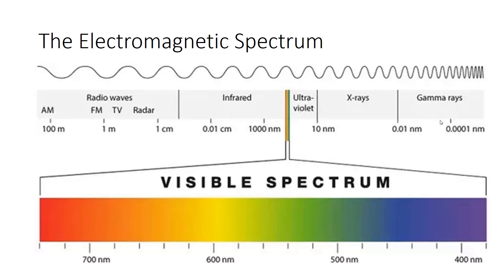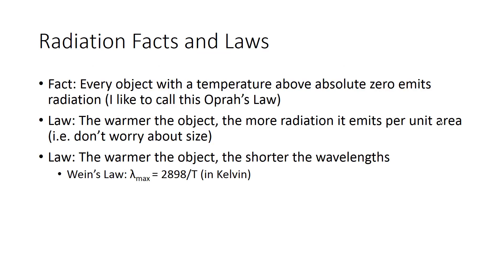But what actually emits radiation, and what type of radiation does it emit? Well, there are three facts and laws I need to introduce you to. The first one is, believe it or not, every object with a temperature above absolute zero emits radiation. I like to call this Oprah's Law, because of the joke: you emit radiation, and you emit radiation, and you emit radiation — everybody emits radiation.